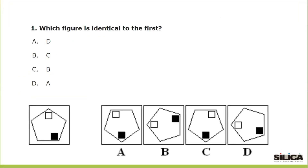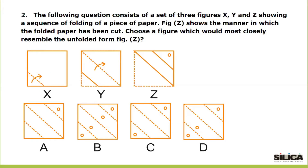Let's look at the type of questions that could be asked. The first is an image rotation question, where you have to identify which amongst the answer images would be identical to the question image once rotated. Another example: if a paper is folded according to the directions given from X to Z, and later a hole is punched as seen in image Z on the folded paper, what would the unfolded sheet look like? You have to pick amongst answer images A, B, C, or D.